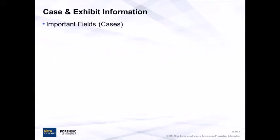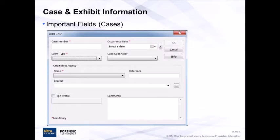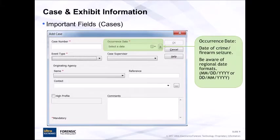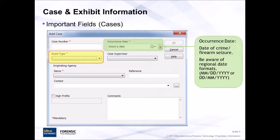When completing the fields in the Add Case dialog box, we want to be as accurate as possible. There are two critical fields for cases. The occurrence date is very important as it determines what the exhibits within this case correlate against. You need to be aware of regional date format variations — whether you use month/day/year or day/month/year format, that has to be set up on your BrasTrax PC. The event type, while not used for correlation, is also important as it determines what exhibit categories will be available when we add an exhibit.